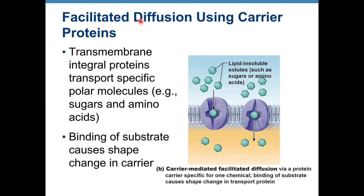Here's an example of facilitated diffusion using carrier proteins. Because it's still diffusion, we don't need ATP energy and substances move down their concentration gradient. Facilitated means we have the help of proteins. Carrier proteins are transmembrane integral proteins that transport specific polar molecules such as sugars and amino acids. When a sugar molecule binds to a carrier protein, the carrier protein changes its shape and the molecule moves in — it binds, opens up, and sugar is inside the cell. No ATP, and movement is from high concentration to low concentration.